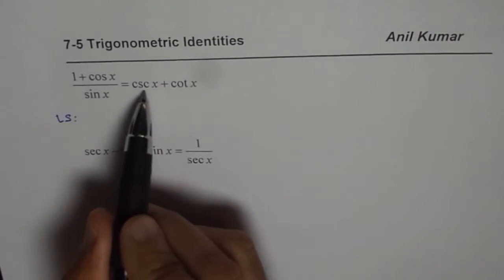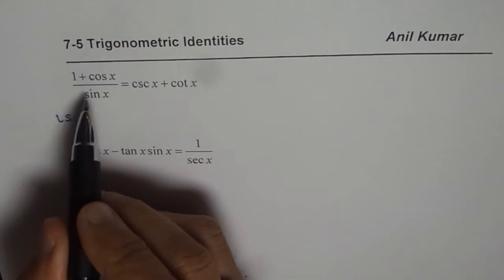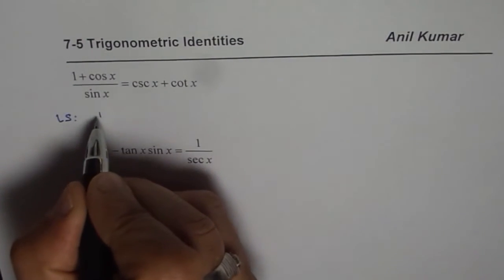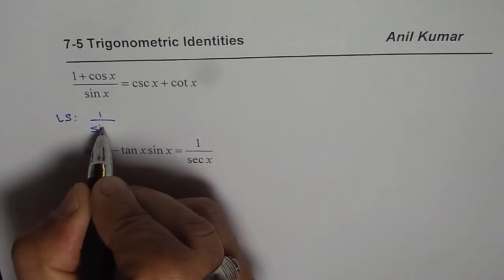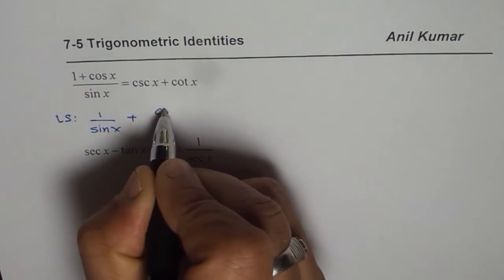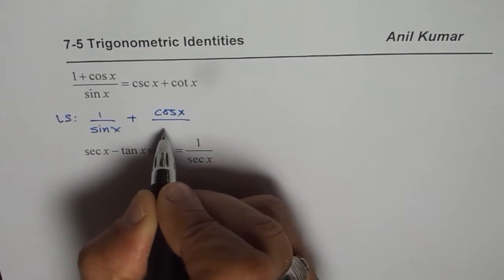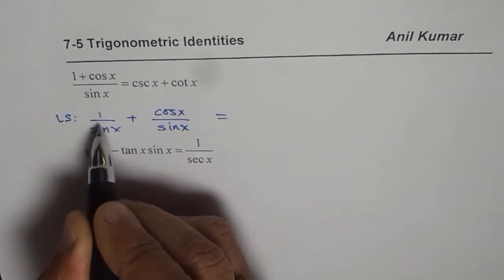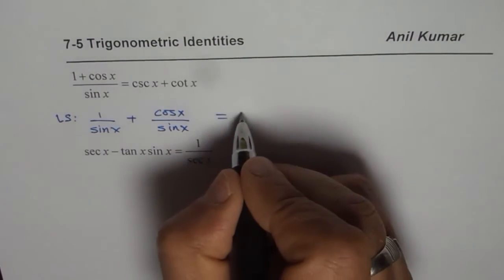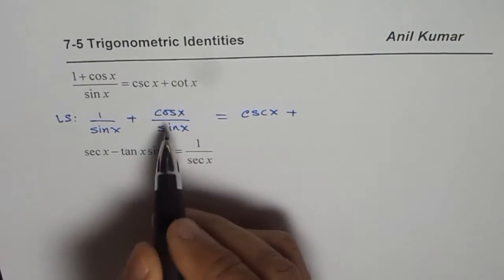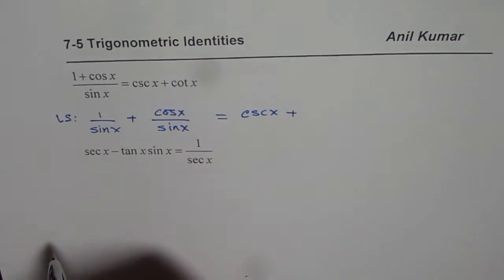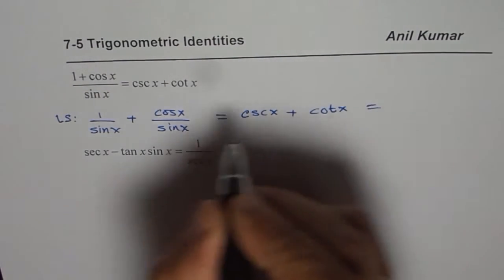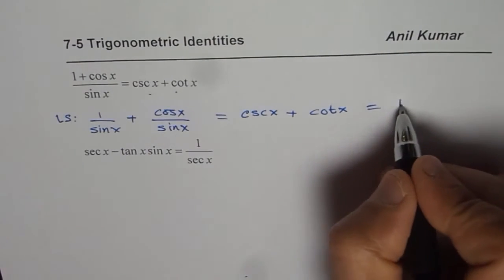Don't be afraid of these reciprocal identities. Now 1 plus cos x divided by sine x could be written as 1 over sine x plus cos x divided by sine x. Now what is 1 over sine x? As you know, it is cosecant x and what is cos x over sine x? It is cotangent x. And that is what you need. So we get the right side.